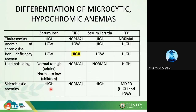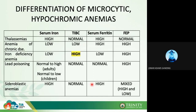Serum iron is normal to high in lead poisoning and sideroblastic anemia because the problem is not the iron itself but the heme pathway. In contrast, serum iron is low in anemia of chronic disease and iron deficiency anemia. Free erythrocyte protoporphyrin (FEP) is high in iron deficiency anemia, mixed in sideroblastic anemia, and high in lead poisoning. TIBC is increased in iron deficiency anemia but low in anemia of chronic disease.